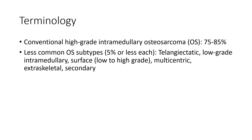Conventional high-grade intramedullary osteosarcoma accounts for around 75% to 85%. Less common osteosarcoma subtypes each represent 5% or less, including low-grade intramedullary, surface, low-to-high-grade, multicentric, extraskeletal, and secondary osteosarcoma.